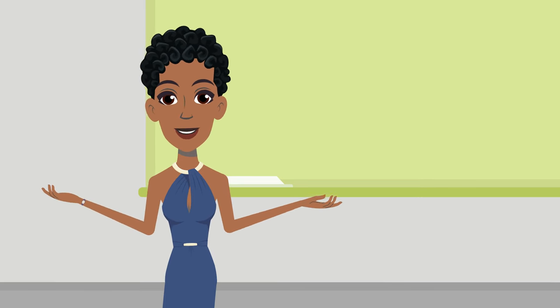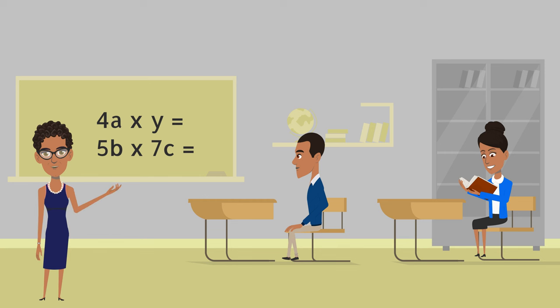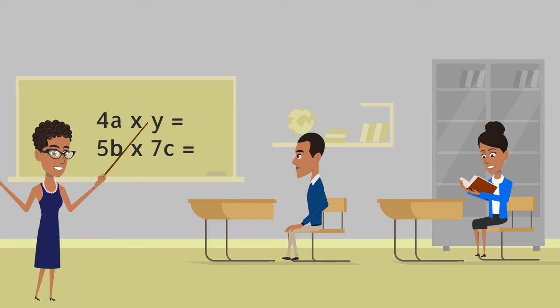However, Dorothy would go on to work as a mathematics teacher at Robert Russo Moulton High School in Virginia in order to assist her family during the severe worldwide economic decline that was the Great Depression.